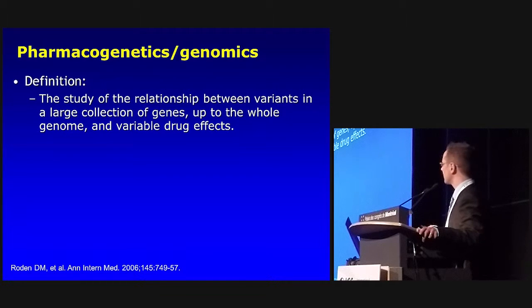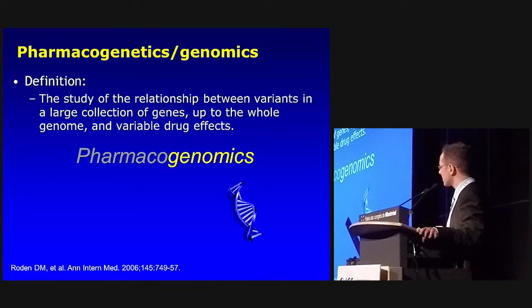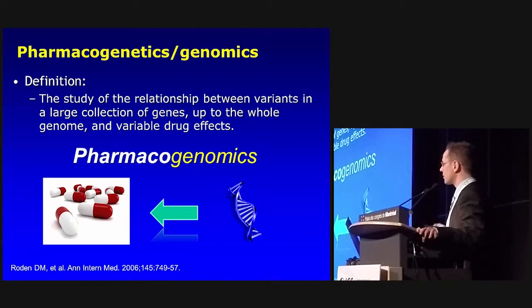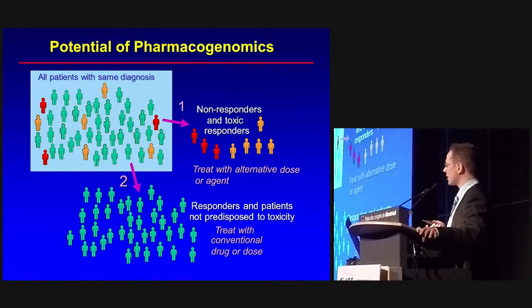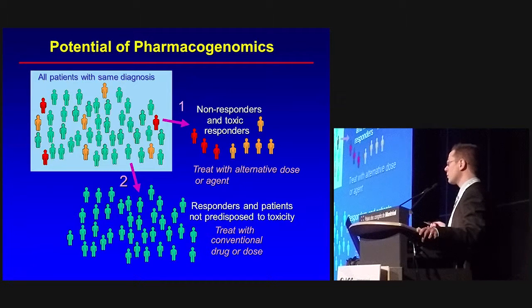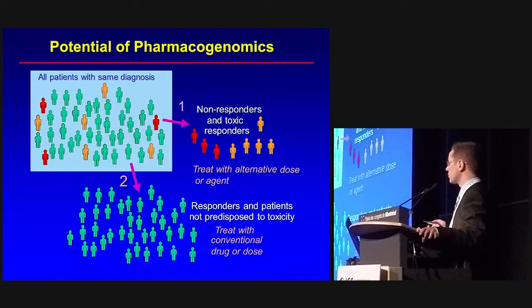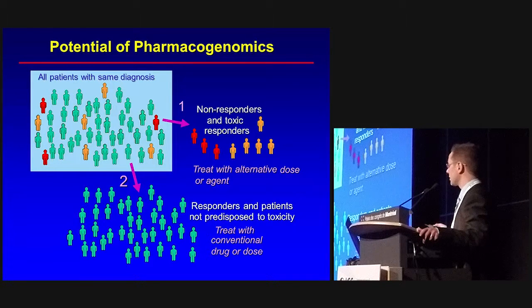So what is pharmacogenomics? Basically, it's the study of how genetic variation can influence the response to a drug. It really goes to trying to identify genetic factors that can identify individuals who would not have a good response to a drug — either non-effectiveness, an adverse drug reaction, or individuals who could require a different dosage — and then treat these patients more appropriately than using the commonly used approaches.